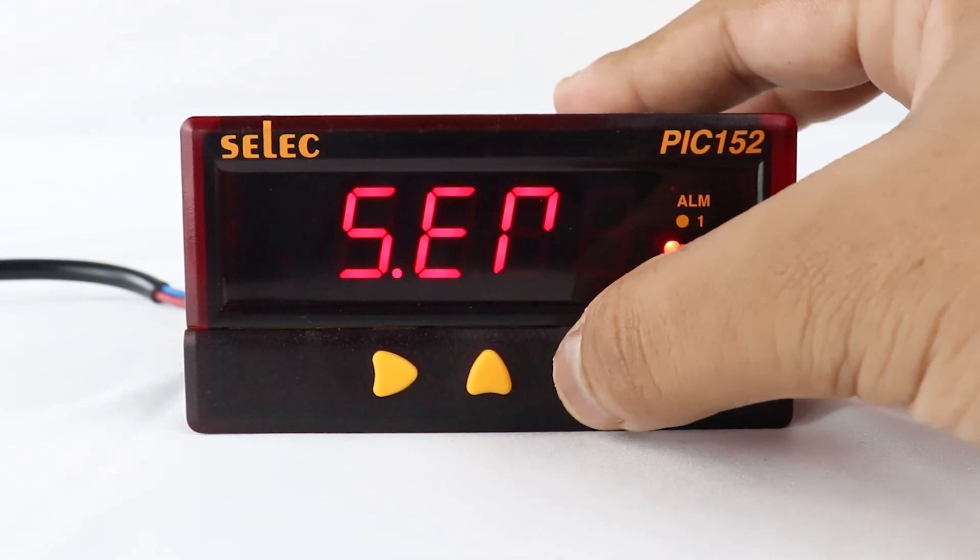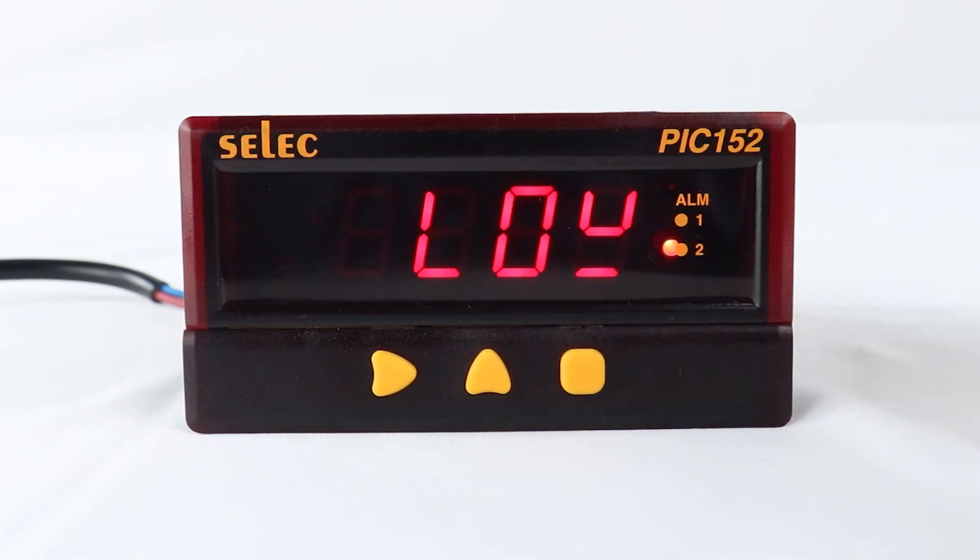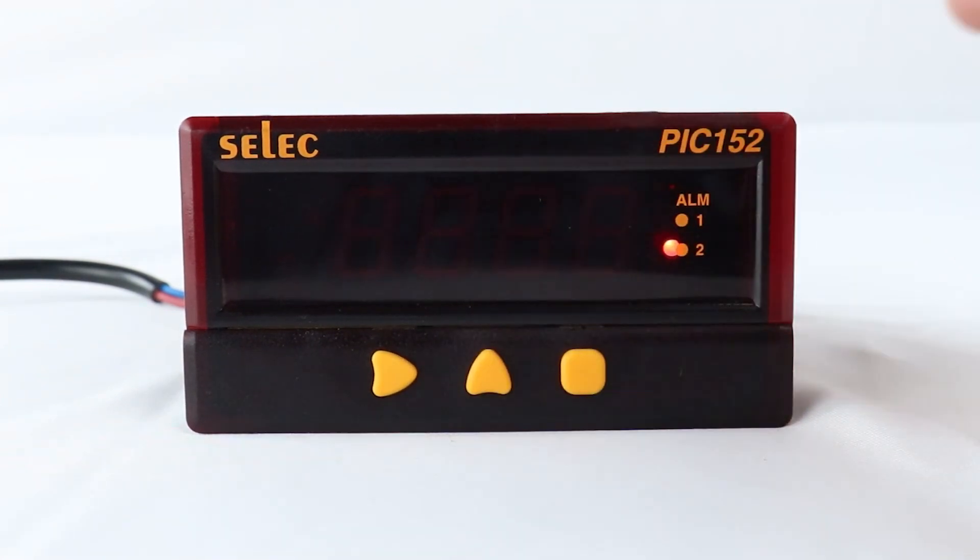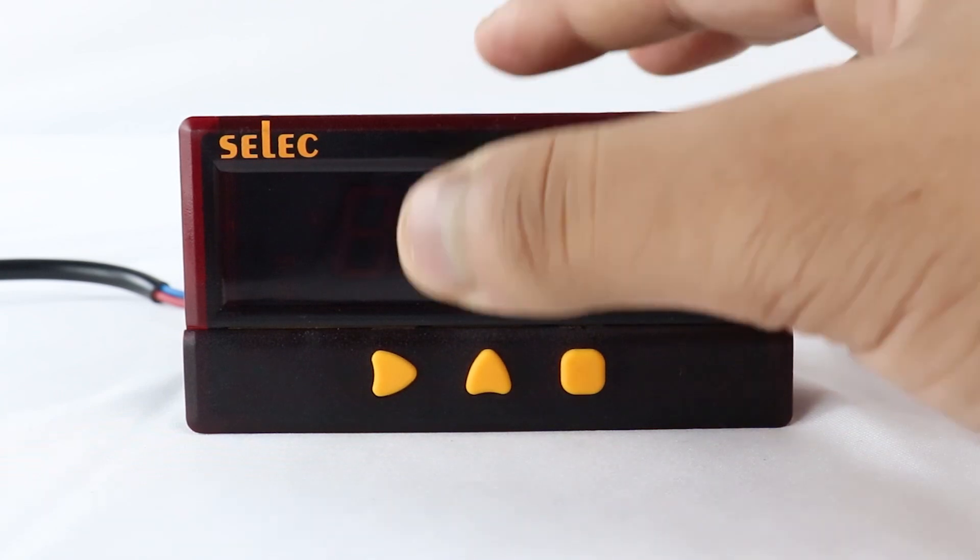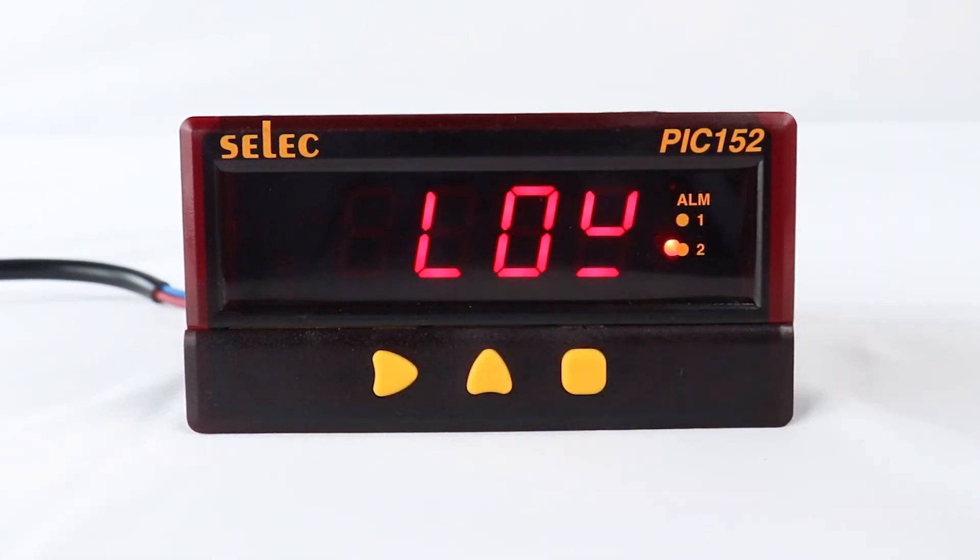Press square key to select sensor error level. In case of sensor failure, if selected high, the output will be maximum, and in case of low, output will be minimum.